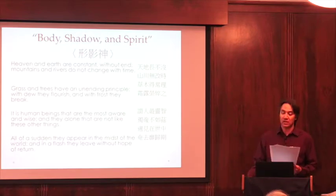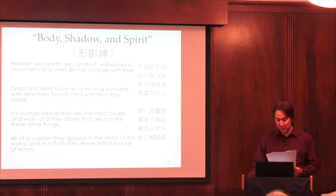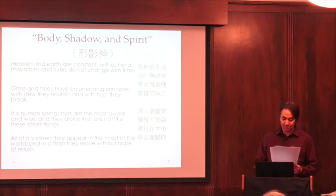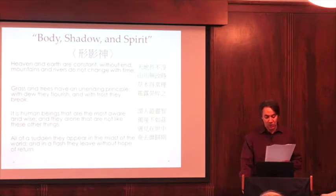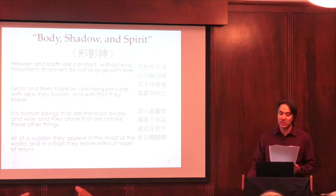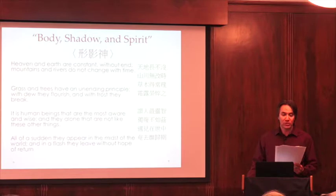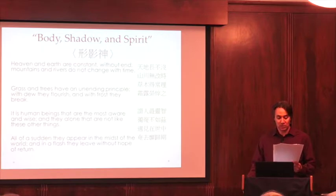Body describes human beings as unlike the heavens and the earth, or mountains and rivers, which seem to have no end. Even plants which wither in the frost come back to life with the fresh dews of spring. Human beings in contrast are not enduring like mountains and do not return to life like plants. Additionally, human beings as the most sentient of beings are profoundly aware of this difference. The other two personified figures in the poem, Shadow and Spirit, come to disagree with Body's proposed method of coping with this condition. However, they do not disagree with Body's description of it.